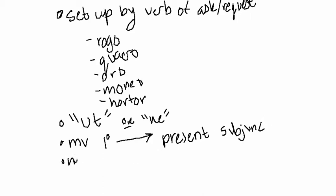And if your main verb is in secondary sequence, or if it is perfect, imperfect, or pluperfect, your subjunctive will be imperfect subjunctive. Easy enough, right?